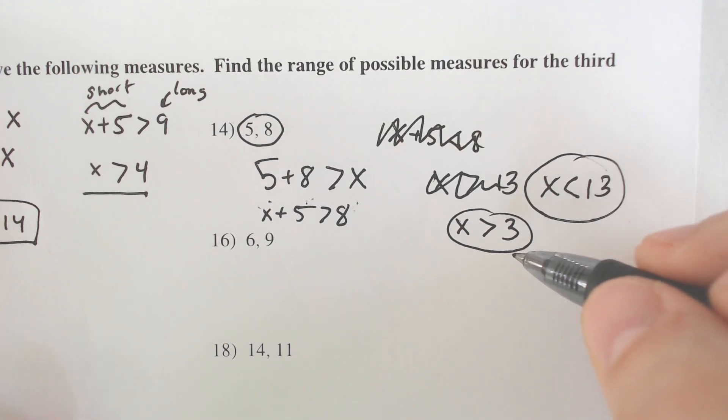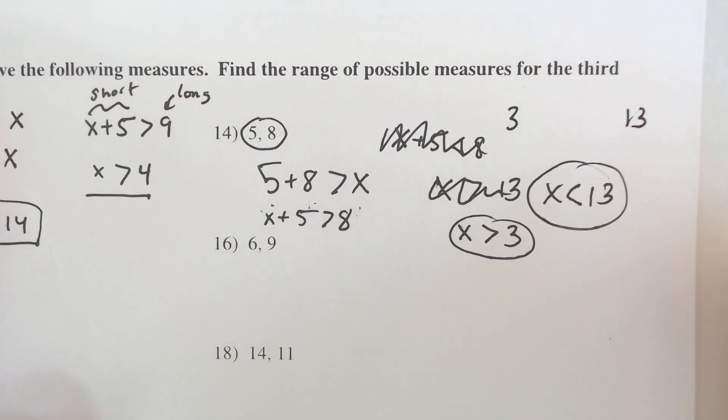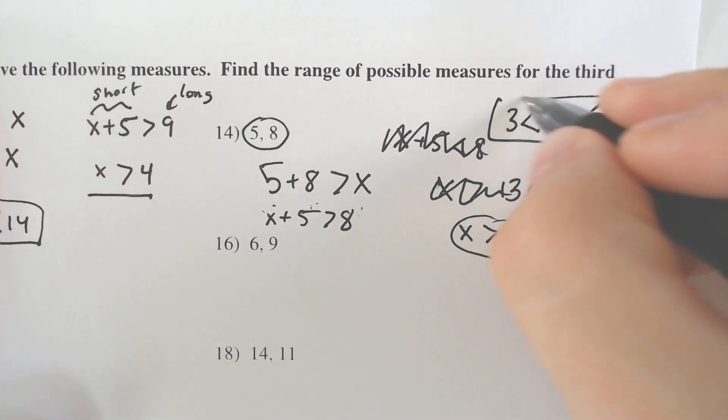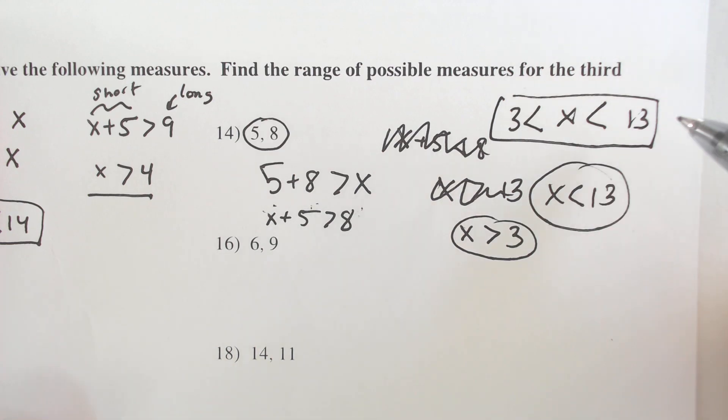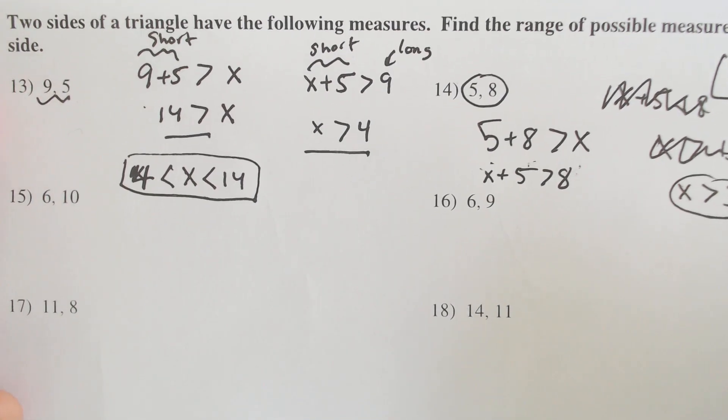So we get our two values. X has to be greater than 3, smaller than 13. You put a 3 here. You put a 13 there. You put an X in the middle, and then you box your answer. So you put the smaller number on the left, the bigger number on the right, X in the middle, less than, less than side in between. Let's do another one because I butchered that one.